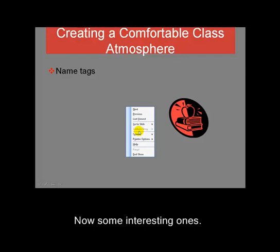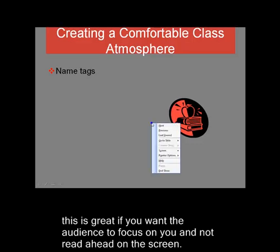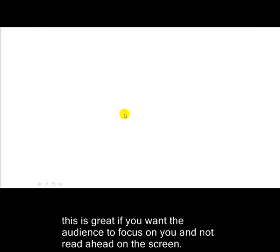Now onto some interesting ones — Screen. Screen allows you to black or white the screen, which basically means remove everything from the screen. That allows you to carry on giving your presentation with nothing on the screen. This has the added benefit of forcing your audience to focus on you and what you're saying, rather than reading ahead on the screen. So if you think your audience isn't quite paying attention, it's a good idea to black or white the screen.